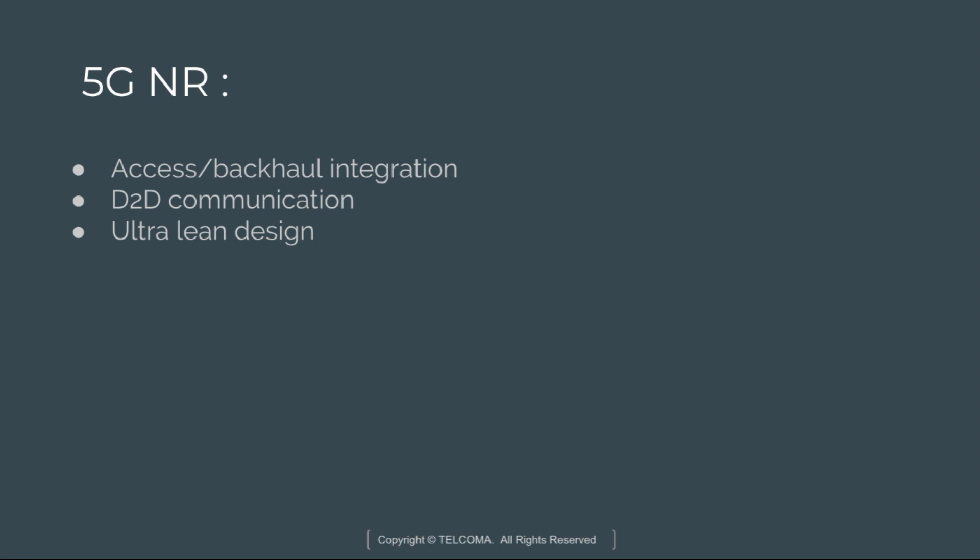Device-to-device communication includes direct communication, device-based relaying, and cooperative devices. We have ultra-lean design, which minimizes transmissions not related to user data. It separates delivery of user data and system information, enabling higher data rates and enhanced energy efficiency.